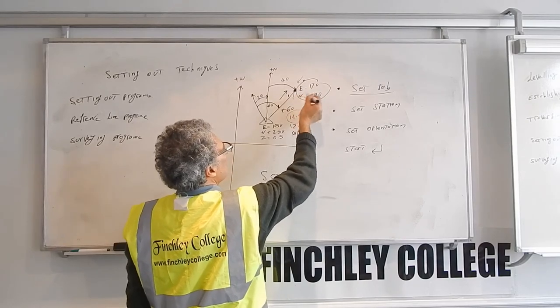So I want to set out point one with these coordinates. It will tell you simply how much to turn from where it's pointing at the moment, and what distance to measure. So you turn the instrument until the difference in angle is zero between what it should be and what it is now.